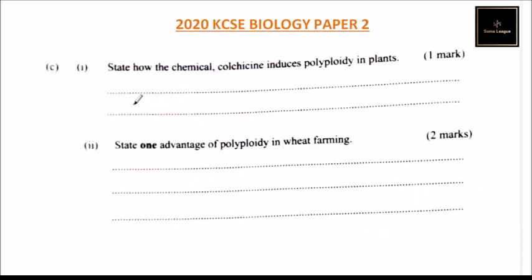Let's go to Part C of question number two. We are told: state how the chemical causes the syndrome and induces polyploidy in plants. Before we answer, note that colchicine is a toxic chemical that is used to induce polyploidy in plants. Polyploidy is a heritable condition of possessing more than a complete set of chromosomes.